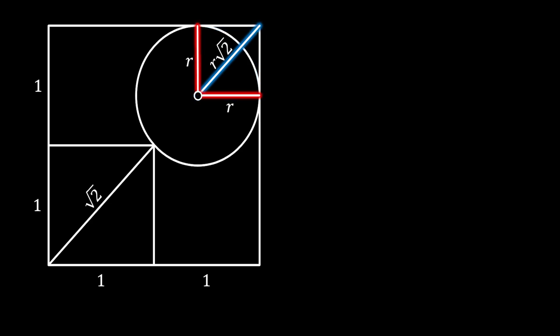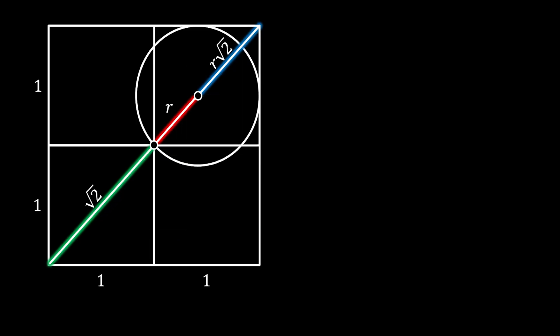Now let's rotate the radius to the point of contact between the circle and the small square. This radius forms a straight line with our two diagonals, since both diagonals are diagonals of squares located at the corners of our big square. The point of contact is the center of the big square, since the small square is twice as small. So the diagonal of the small square equals the sum of the red and blue lines.